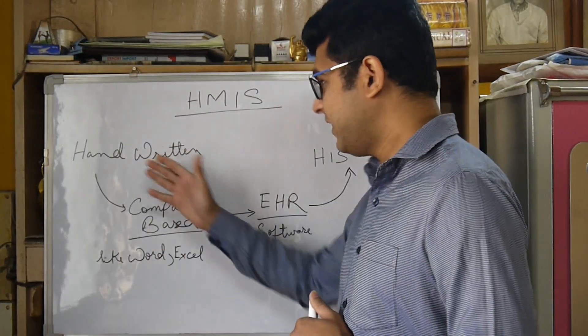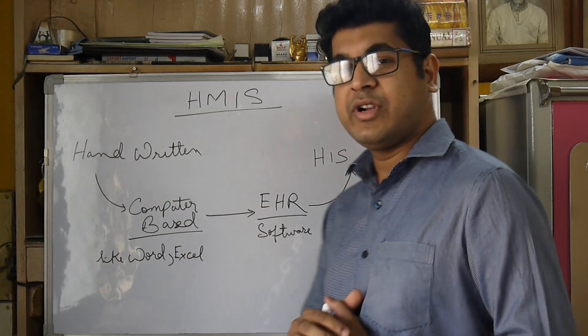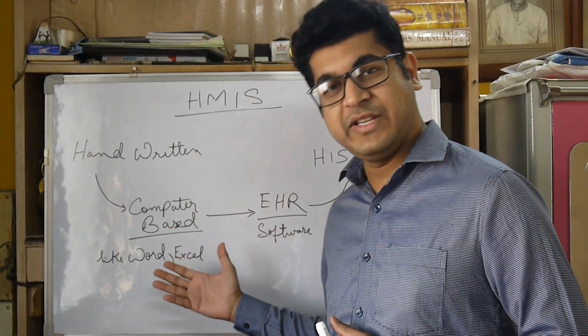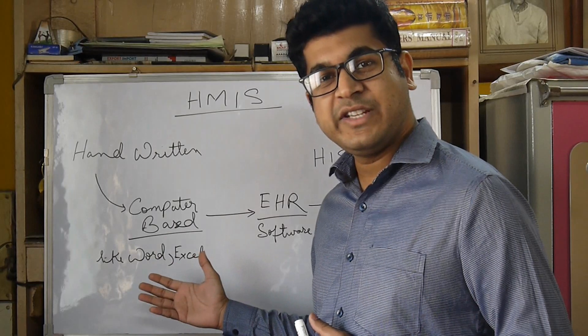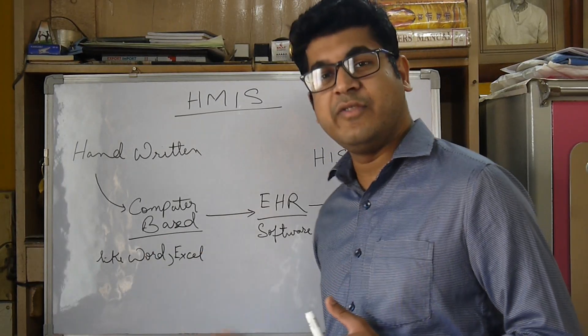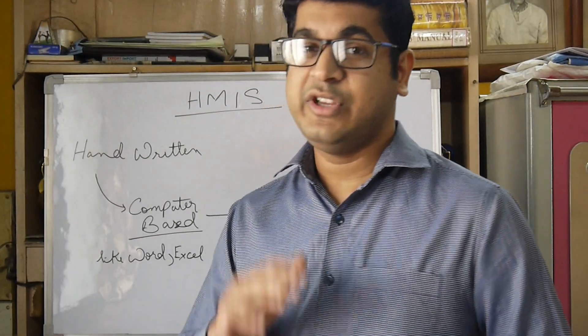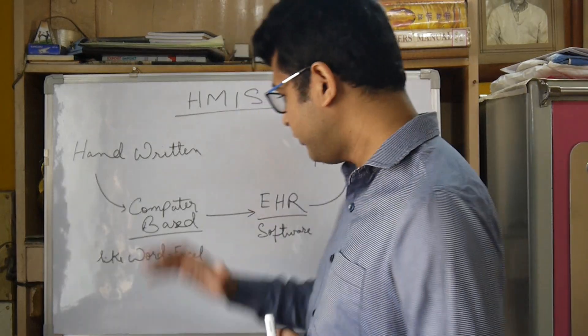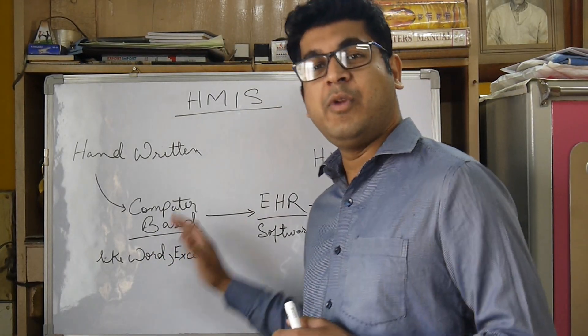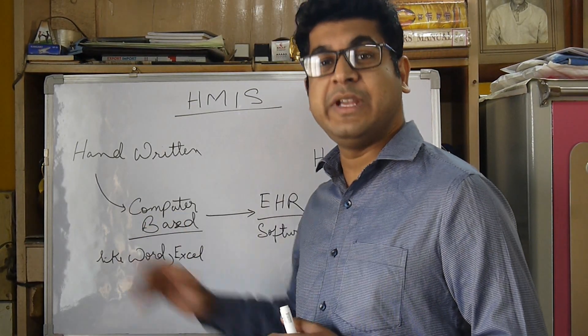Later on, after handwritten records, we moved into computers. During the 1960s, computers came into existence and we all started using computer-based records. But those computer-based records were mostly Word or Excel — if we had numbers we used Excel, and if we had written information we used Word. So Word and Excel were popularly used in computer-based systems.